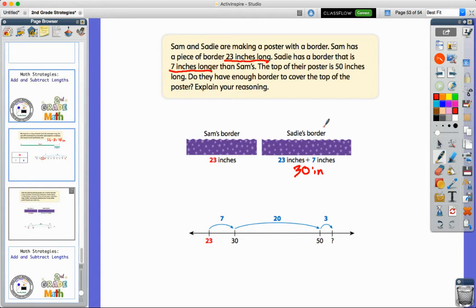So this is a multiple step problem. I first have to figure out what Sadie's border is based on the information I'm given. But then we have to go back and answer the question. So the question says, the top of the poster is 50 inches. Do they have enough? So do they have 50 inches? So to determine if they have enough, I've got to add both pieces of this together.